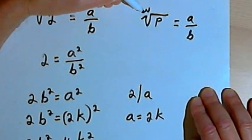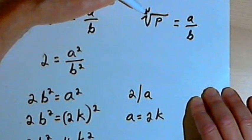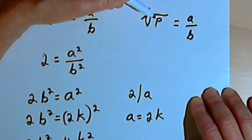And so therefore, you could show that the nth root of whatever prime number you take is going to be an irrational number.